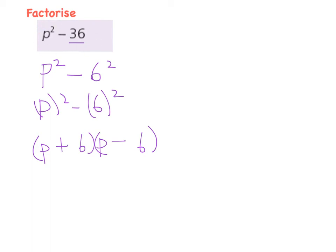And so my answer is p plus six, p minus six. That's the factorization of this example. The thing we had to look for in this case was we had to write 36 as a perfect square, which was six squared, and then use that answer to create this.